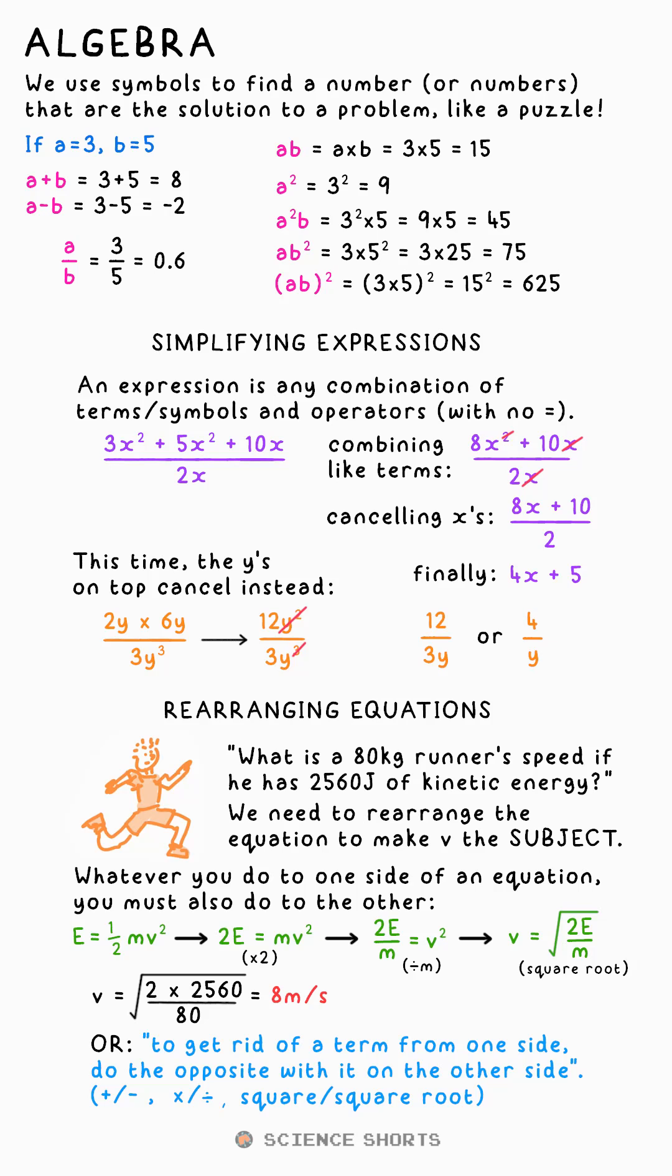The shortcut for rearranging is this: to remove something to the other side of an equation, do the opposite with it. So if multiplying by something on one side, we divide by it on the other and vice versa.